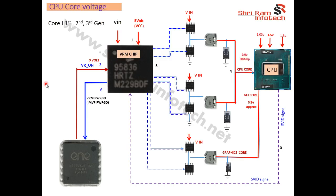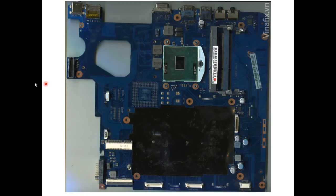Now we'll see how to find the problem if the CPU core voltage is not coming. First, check the CPU core voltage at the coil and the graphics core voltage at its coil. You can also check the DC power supply — if the current is between 150 and 250 milliamperes, the CPU core voltage is not generating. There are many possible reasons for this.